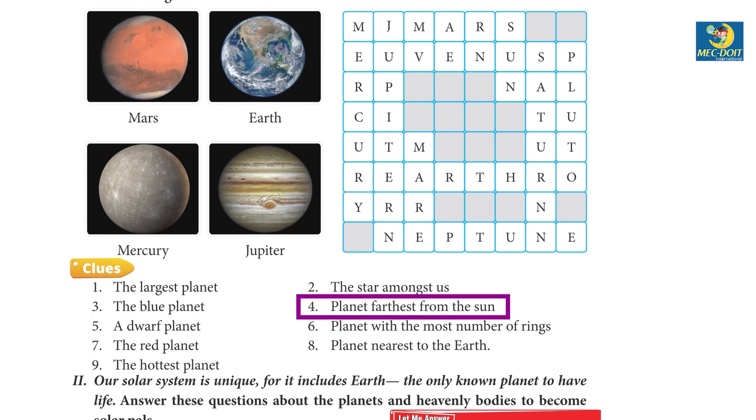4. Planet farthest from the Sun - Neptune. 5. A dwarf planet - Pluto. 6. Planet with the most number of rings - Saturn.